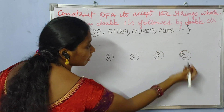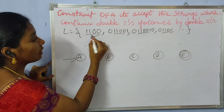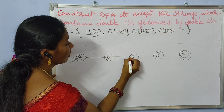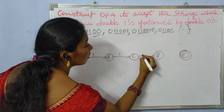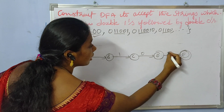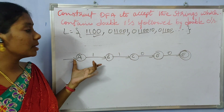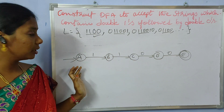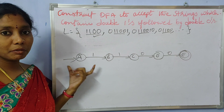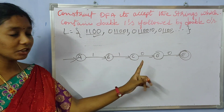This is the final state and this is my initial state. We represent the states for 1, 1, 0, 0. Here 1, 1, 0 and this last one is 0. This DFA accepts 1100. First, at a basic level, let us construct the DFA which will accept the string 1100.